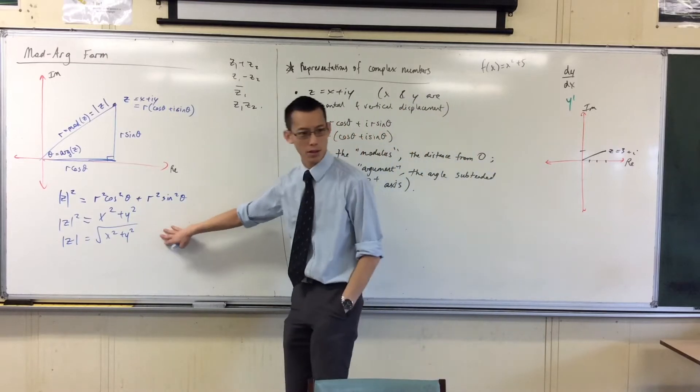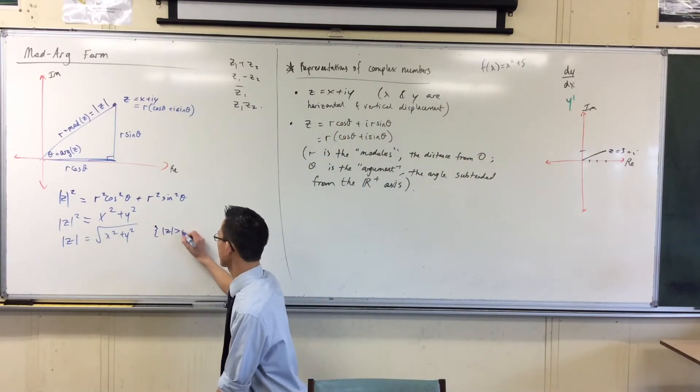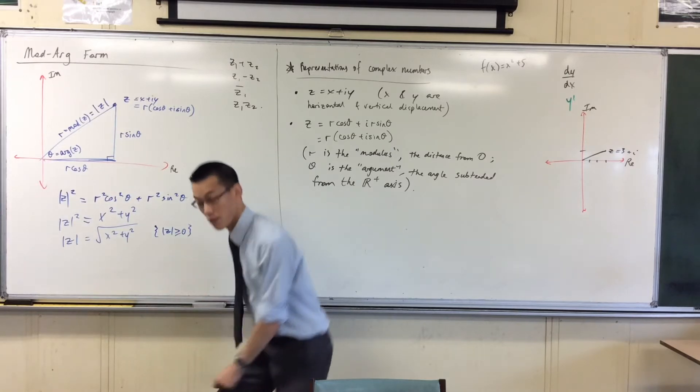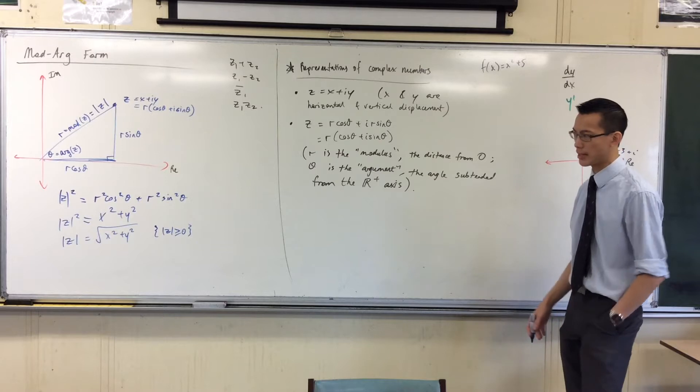And of course, I've only taken the positive square root because the modulus, by definition, well it can be zero I suppose if I'm writing the origin, but I don't want it to be negative. So I'm excluding that value.